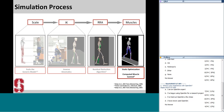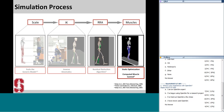Whichever method is used, at the end of this process we have a predictive set of muscle forces for each subject's motion. We completed this process for all 12 subjects. Scaling, inverse kinematics, the residual reduction algorithm, static optimization, and computed muscle control are all built-in tools available in OpenSim.